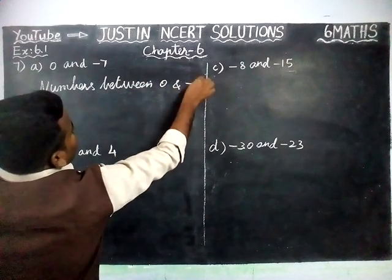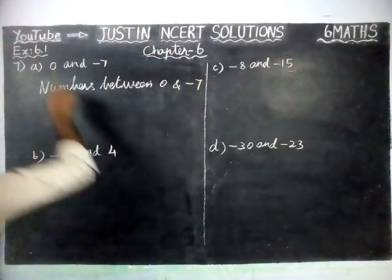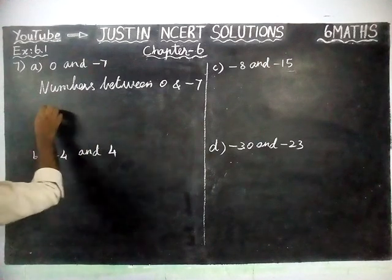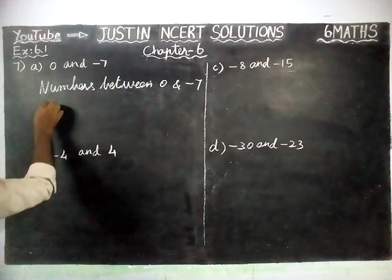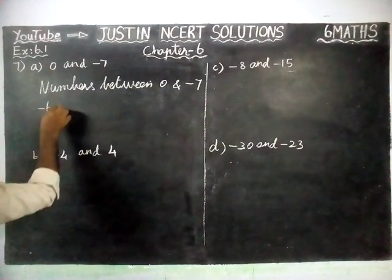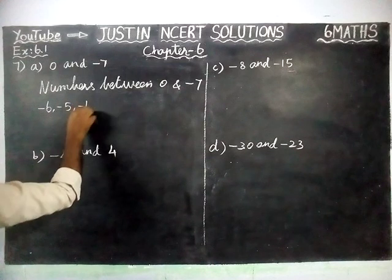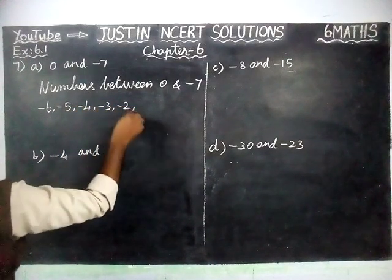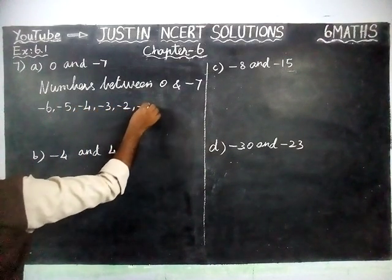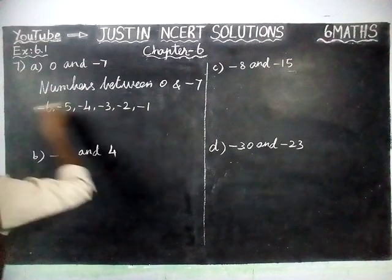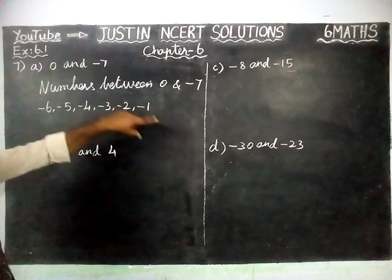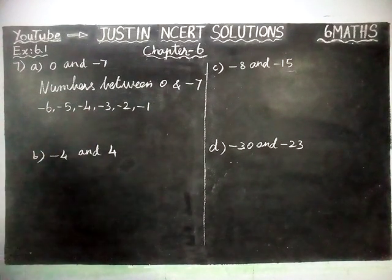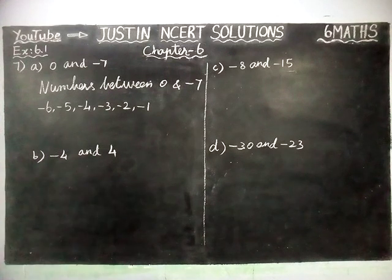Numbers between 0 and minus 7. Here, in increasing order, we have to write. So, from the smallest number: minus 6, minus 5, minus 4, minus 3, minus 2, minus 1. We cannot write minus 7 also, because between 0 and minus 7, these are all the numbers between them.